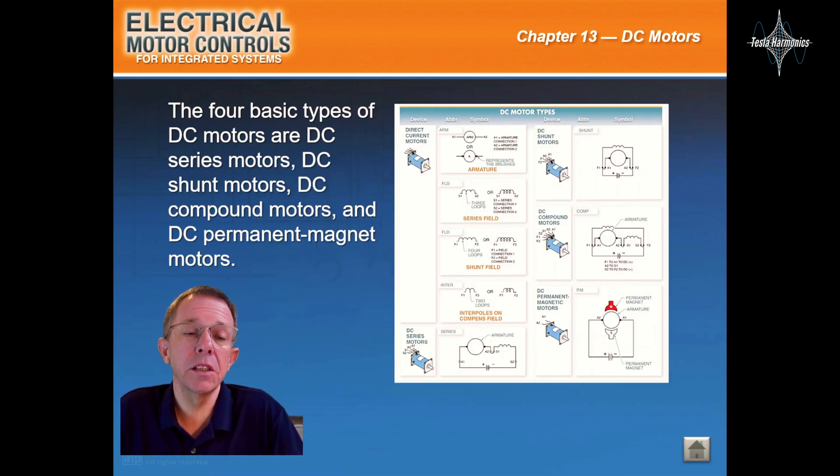The four basic types of DC motors are DC series motors, DC shunt motors, DC compound motors, and DC permanent magnet motors.